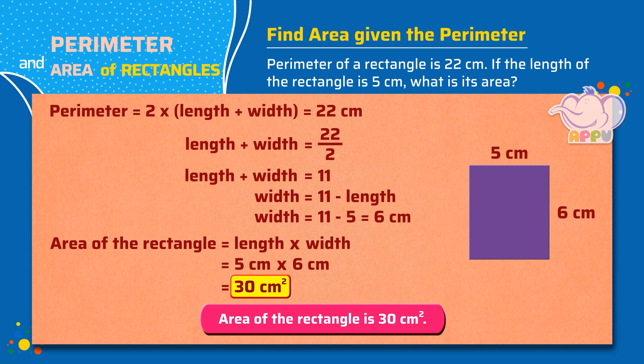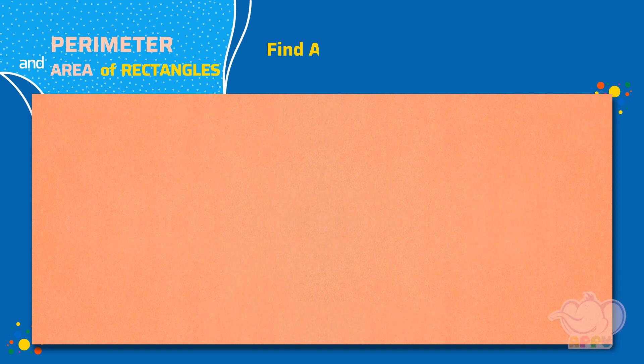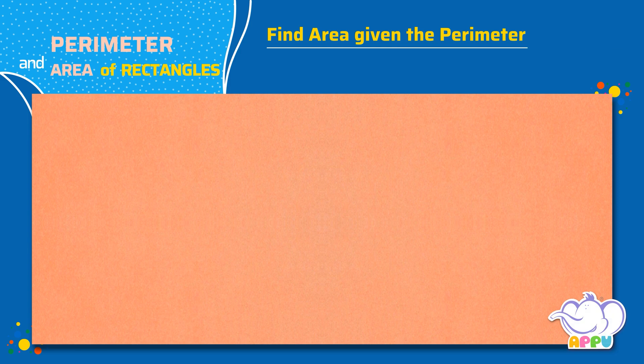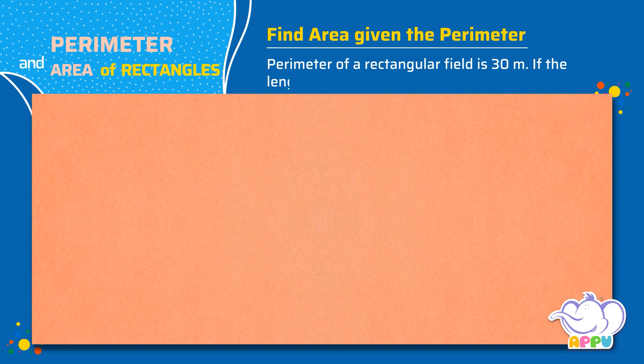The perimeter of a rectangular field is 30 meters. If the length of the field is 7 meters, what is its area?